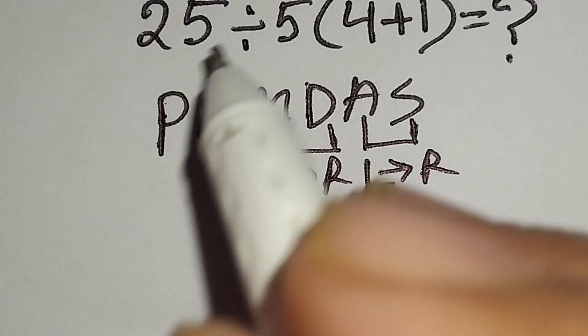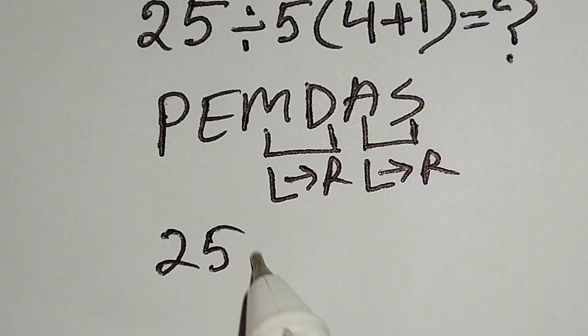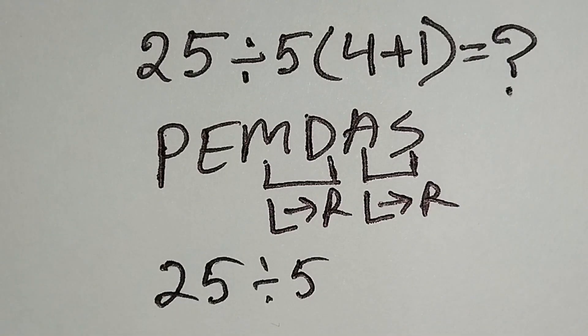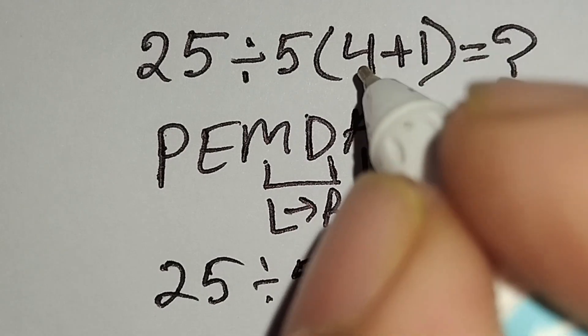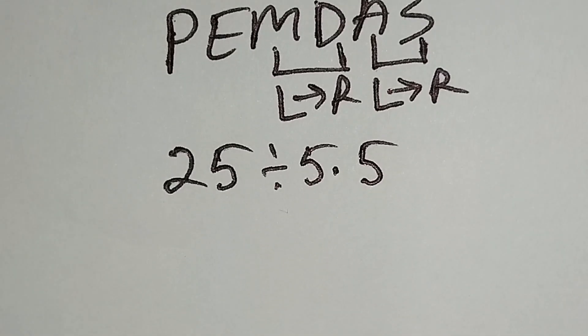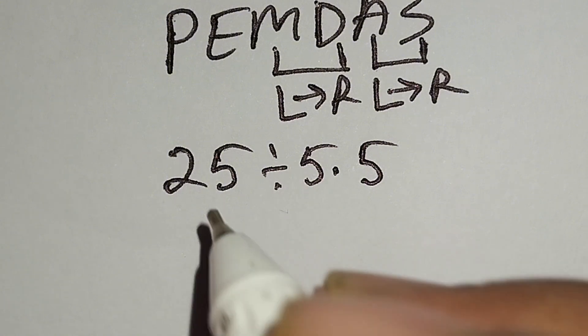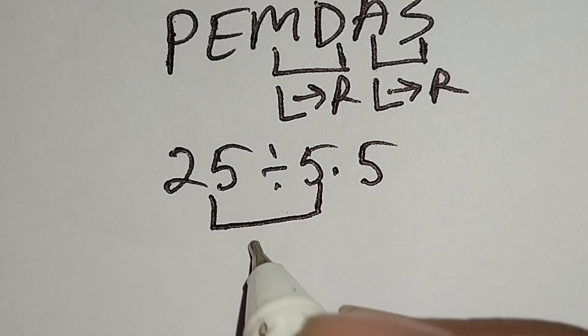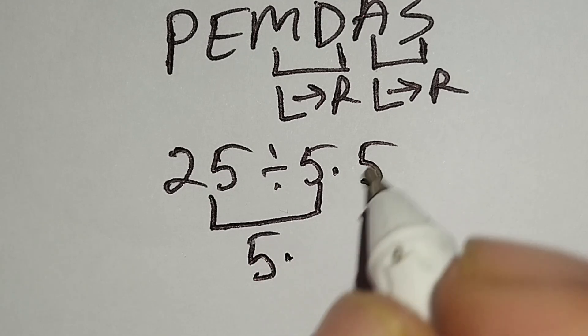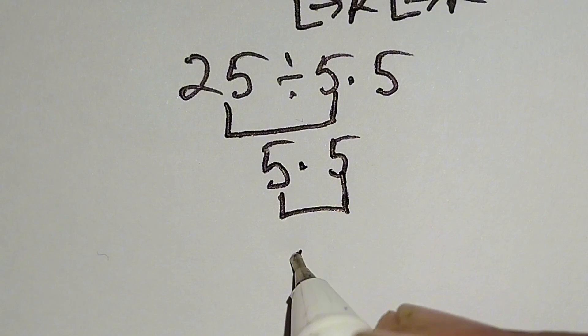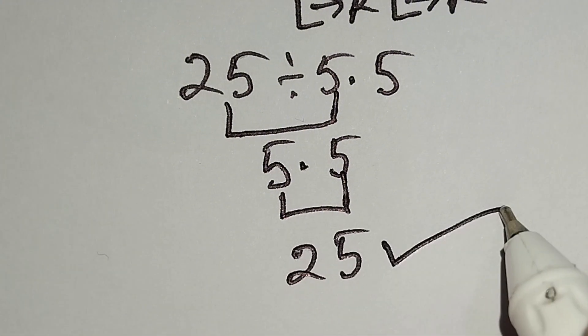Therefore, here this 25 divided by this 5. Now I have to work with this parenthesis. Here 4 plus 1 gives us 5. Now I have to work with division. For this, here 25 divided by 5 gives us 5, times this 5. Here 5 times 5 gives us 25, and this is the correct answer.